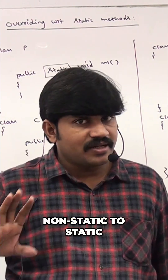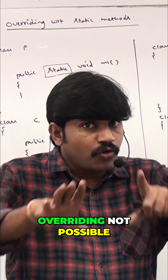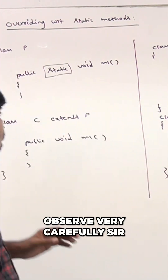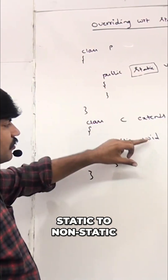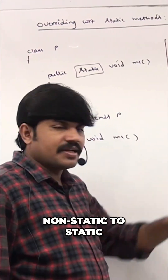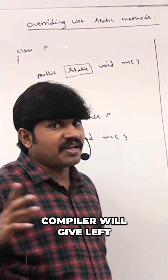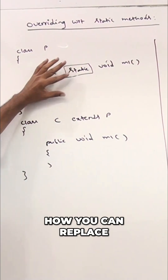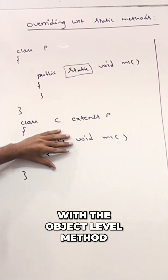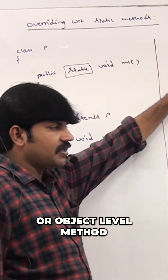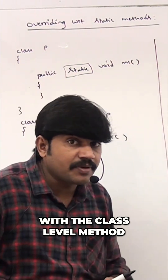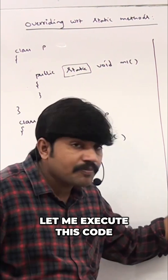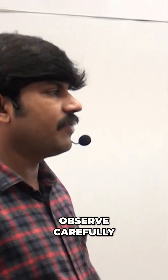Static to non-static, non-static to static — overriding is not possible. Remember this. If you try to do this, the compiler will give an error right away. A class level method cannot replace an object level method, and an object level method cannot replace a class level method. We will get a compile time error. Let me execute this code — observe carefully.